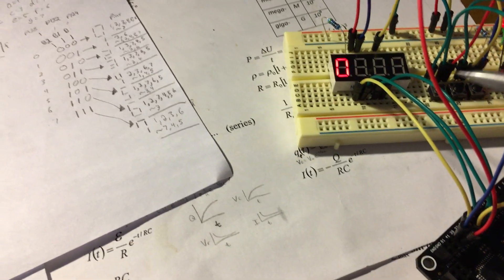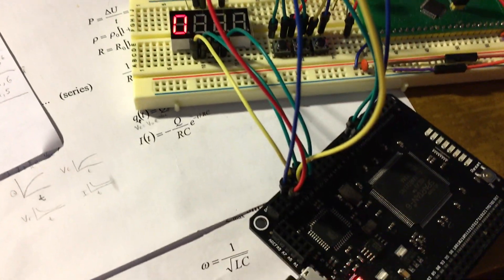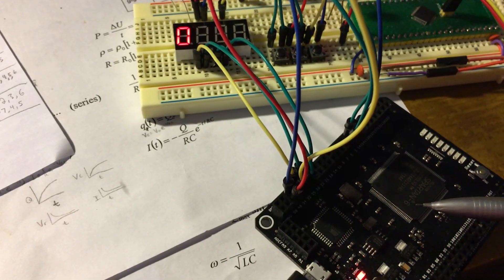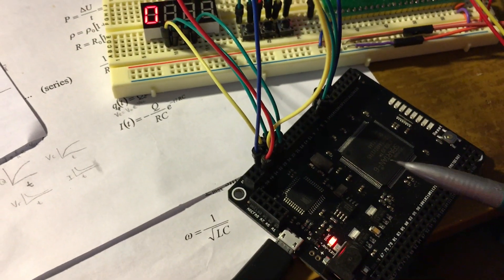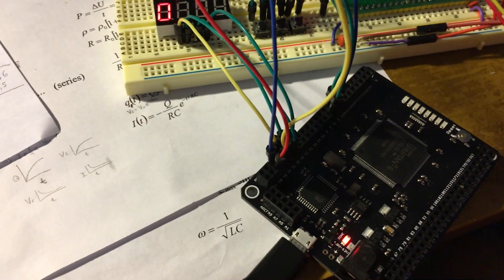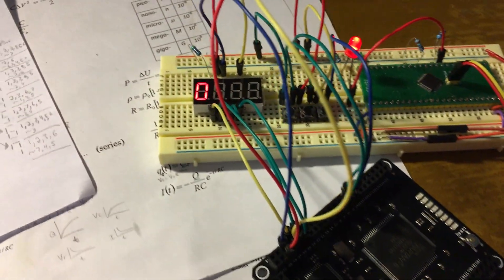This is how to drive a 7 segment display with an FPGA. This is a Spartan 6 chip on a mojo board, or at least it's known as the mojo board.